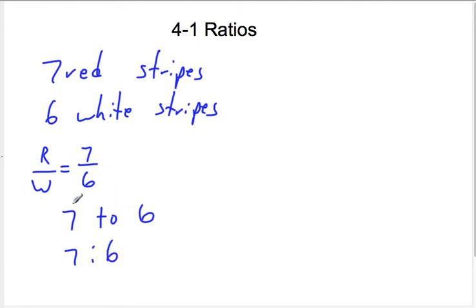And you can also see it written like this. So there's three ways to write a ratio as a fraction. Seven over six. And this part is the ratio, right? This is just here to help remember which thing went on top. So we know the top was red and the bottom was white. But the actual ratio is the seven over six here.